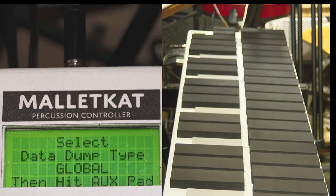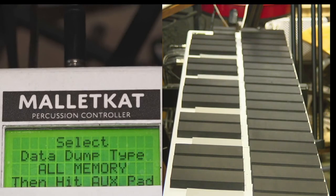Usually the first thing that you see, the first type of data dump is global. That's your training settings. And then there's all memory, that's everything inside the Malacat.